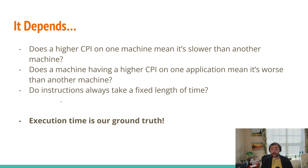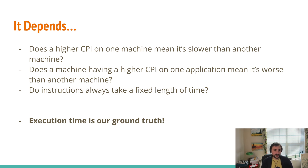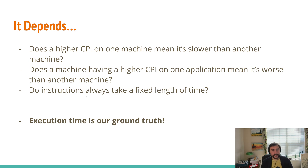Do instructions always take a fixed length of time? Generally no, which makes metrics like IPC or CPI not always the best. An add or multiply instruction will generally take some fixed length of time, except for any dependencies. But think about something like a memory access — it takes a very different amount of time depending on whether data is in our L1 cache, L2 cache, main memory, or off on a disk. So those memory instructions — loads and stores — are not going to take the same amount of time. These are important things to keep in mind when estimating whether we'll have good or bad performance and why.